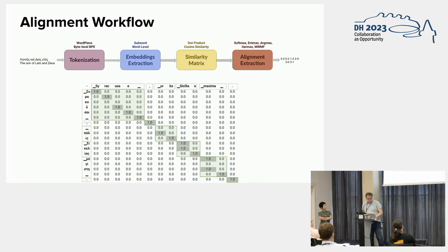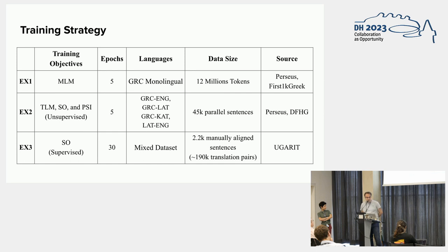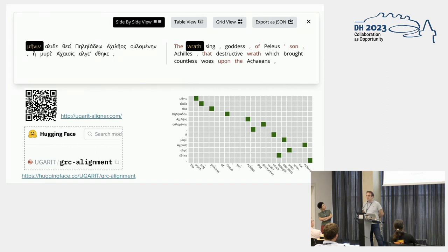The problem was that XLM-RoBERTa and mBERT don't support ancient Greek — they are trained on modern Greek. So we needed to fine-tune these models with our data. First we fine-tuned the multilingual models with monolingual ancient Greek data: 12 million tokens extracted from the Greek Digital Library and the First Thousand Years of Greek. The second step was unsupervised fine-tuning with 45,000 parallel sentences, and finally supervised fine-tuning with expert-produced word-level translation alignment, yielding almost 190,000 translation pairs.